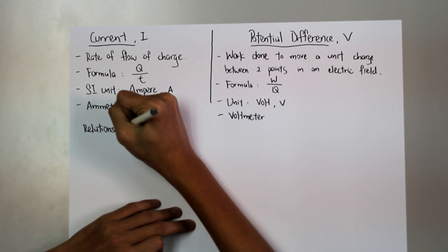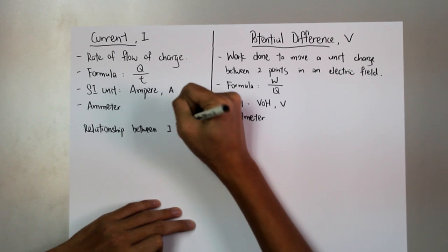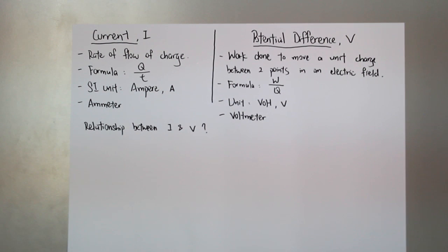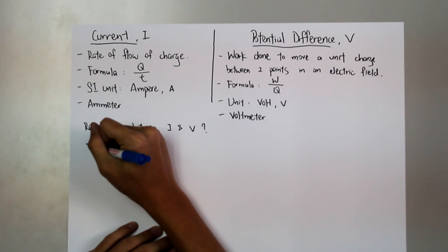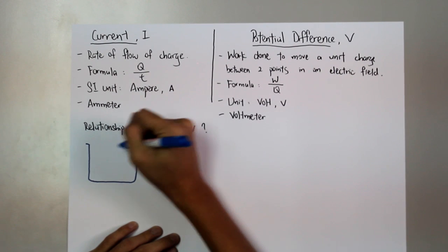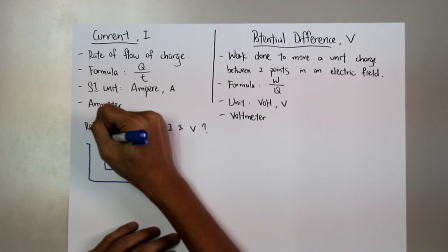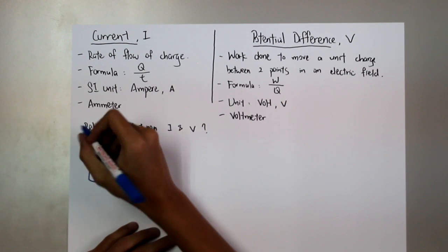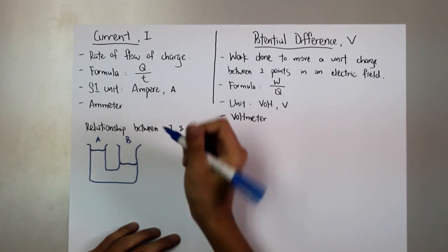Now, how can we explain the relationship between current and potential difference? Let's imagine there is this U-shaped water container, and I label this side as A, and this side as B, where the water level at one side is higher than the other side.